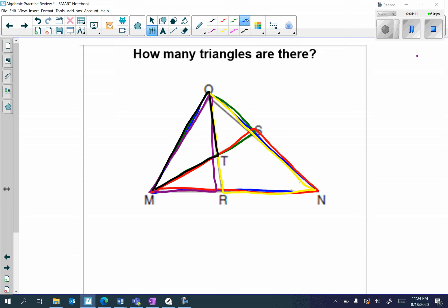Then, I have triangle TOS. Then, I have triangle MTR. Notice that this triangle, this is actually not a triangle. That's not a triangle. So, I think I have eight triangles.